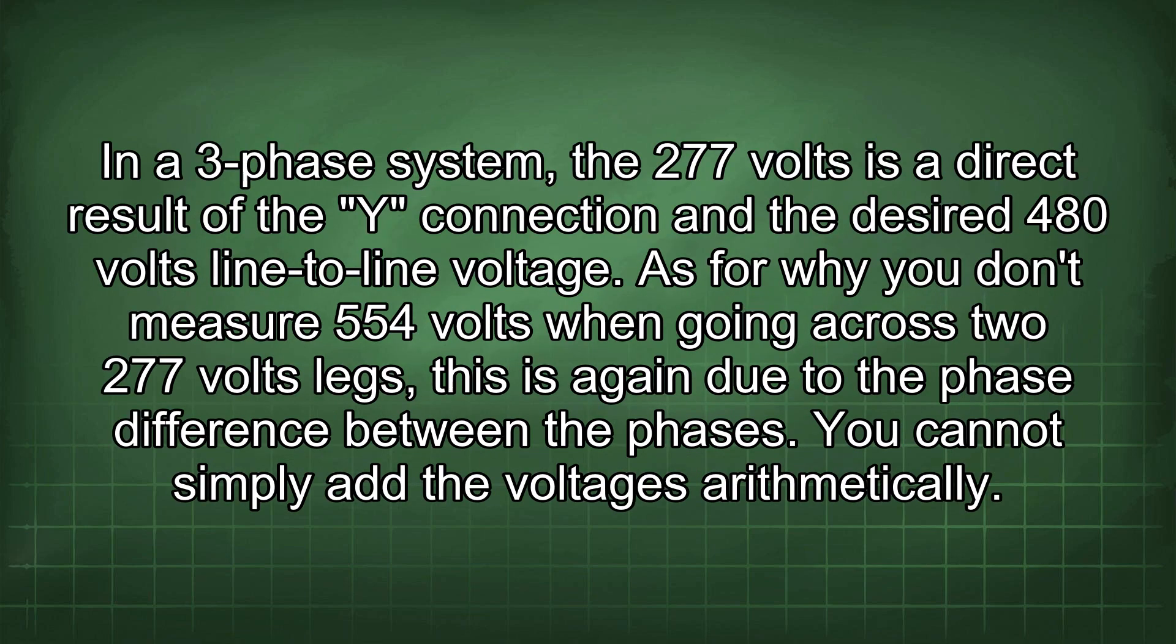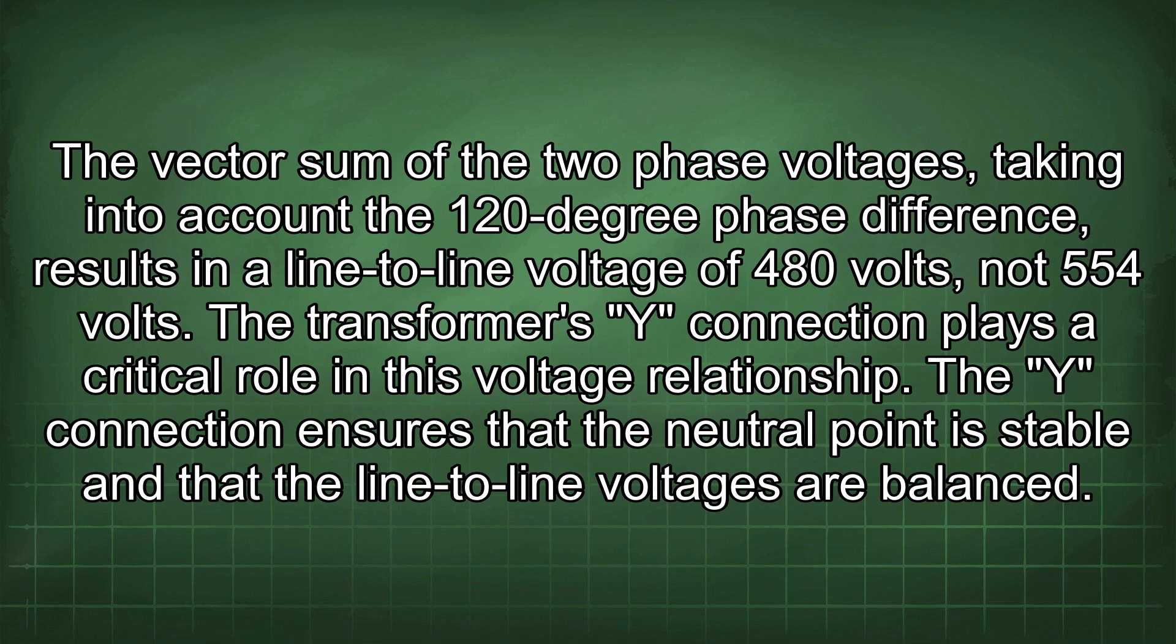In a 3-phase system, the 277 volts is a direct result of the Y connection and the desired 480 volts line-to-line voltage. As for why you don't measure 554 volts when going across two 277 volt legs, this is again due to the phase difference between the phases. You cannot simply add the voltages arithmetically. The vector sum of the two phase voltages, taking into account the 120 degree phase difference, results in a line-to-line voltage of 480 volts, not 554 volts.